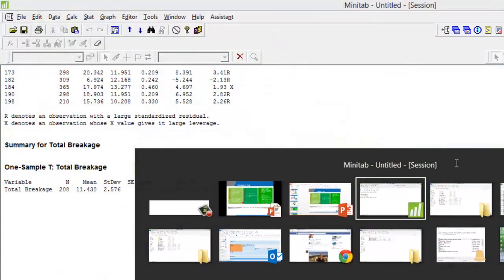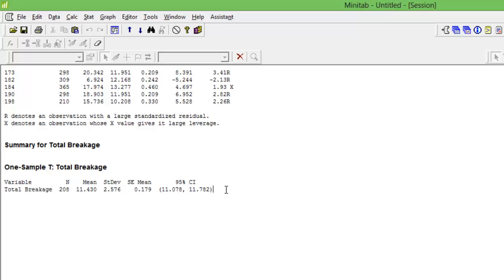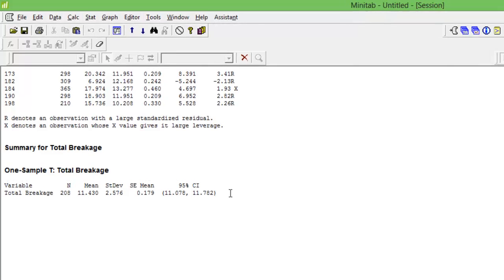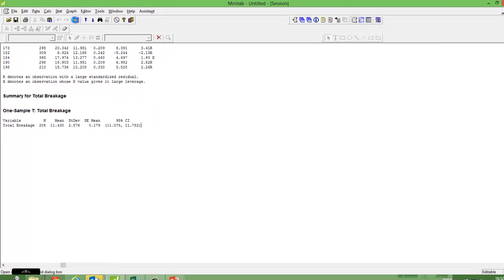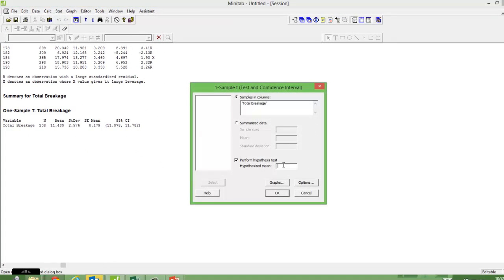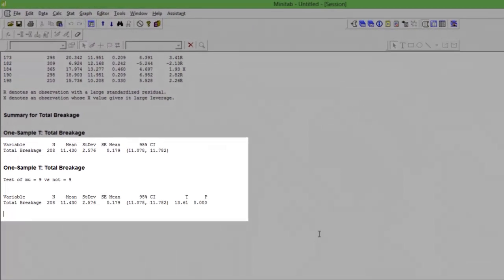If your target is anywhere outside this, let's say my target were 9 kg, then it will be alternate hypothesis. Let me do that for you. Let me give it a target of 9. Obviously 9 will not fit between 11.07 and 11.7, so it will say alternate hypothesis.